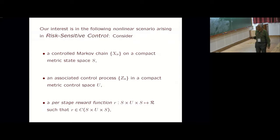I have a controlled Markov chain on a compact metric space S. There has to be a state process, which is controlled by some control process. The V_j tend to be in a compact metric control space U. And there's a reward function, per-stage reward function. Each time, based on the current state, next state, and the current control, you get some function of it as your reward.